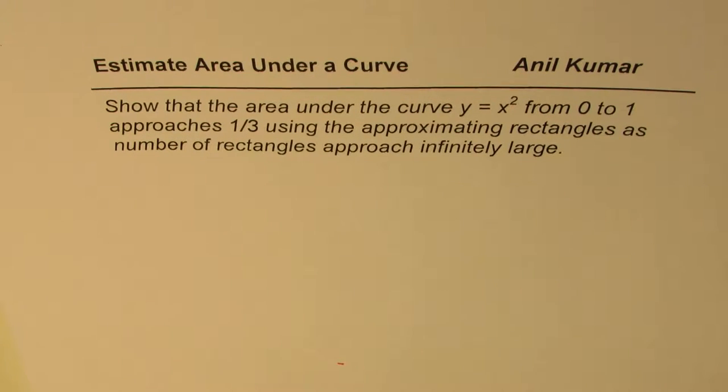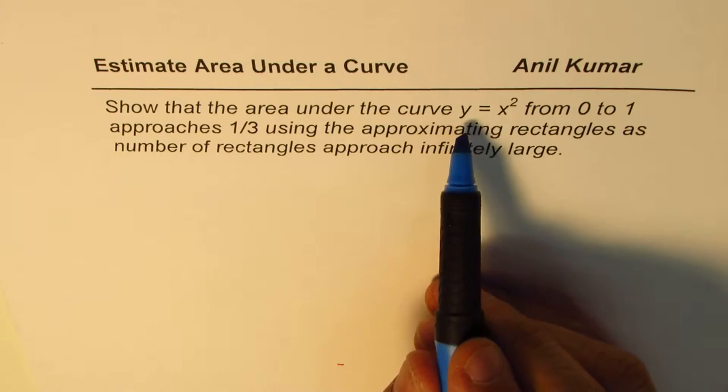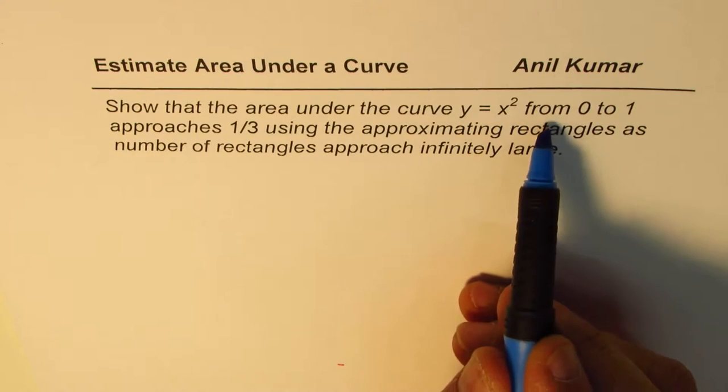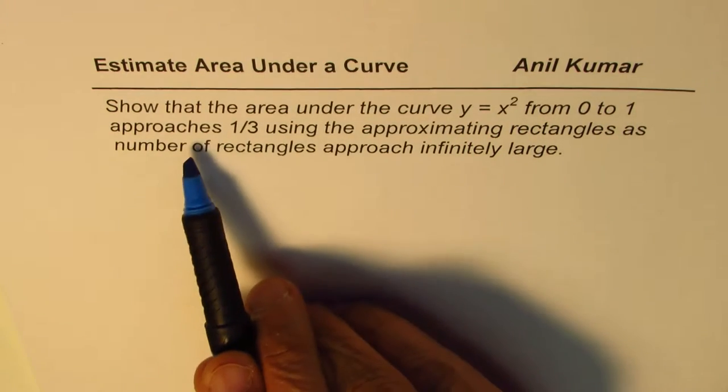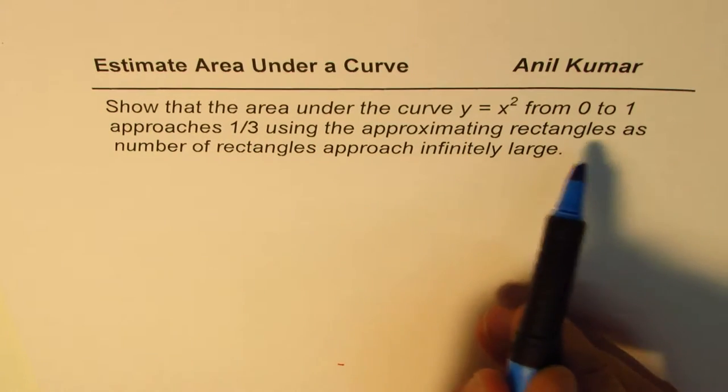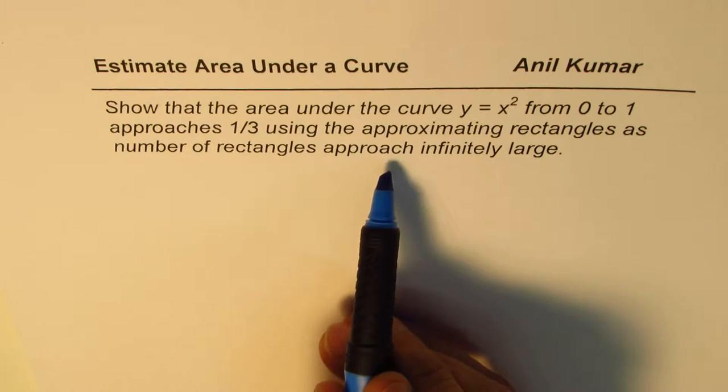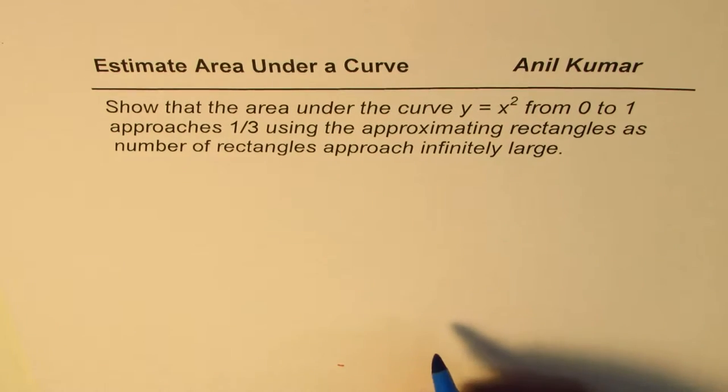I'm Anil Kumar and in this video we'll estimate area under a parabola. The question here is, show that the area under the curve y equals x squared from 0 to 1 approaches 1 over 3 using the approximating rectangles as number of rectangles approach infinitely large. So that's the question for you.